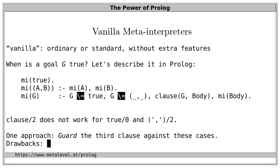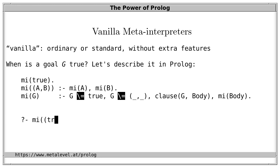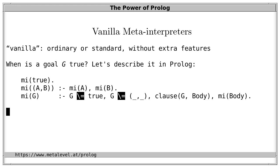It's clear how we can solve this: we can guard the last clause against these cases so that 'clause' is no longer invoked for built-in predicates that yield an error. We simply say: for this clause to apply, G must not unify with the atom true, and it must not be a conjunction. That would solve it, but it comes with drawbacks. First, 'not unifiable with' is an impure predicate because it can yield unsound results. Second, we also get redundant choice points. Still, we can already use this meta-interpreter.